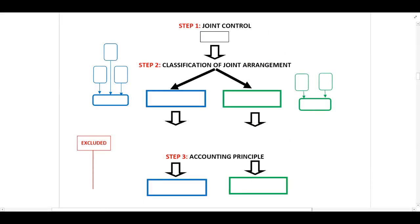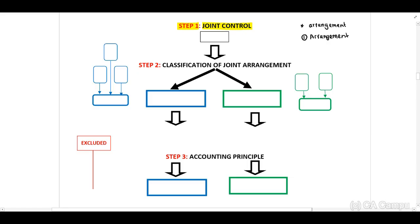Now let's look at the basic three steps. Our first step: we need to determine if there is joint control. How do we determine this? There has to be a contractually agreed sharing of control of an arrangement — there has to be an arrangement where entities will share control. To identify joint control within this arrangement, we will look at three important elements. The first is our contractual arrangement; we need to understand the details in our arrangement and it must be present in some form.